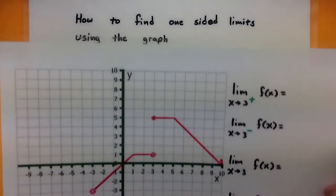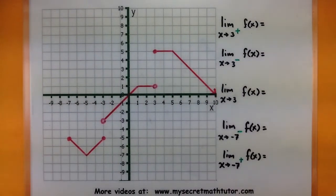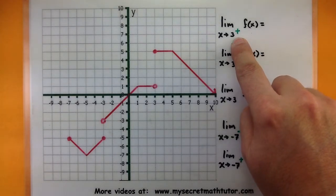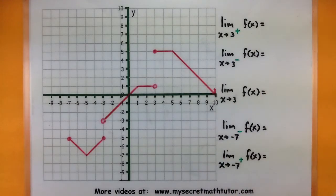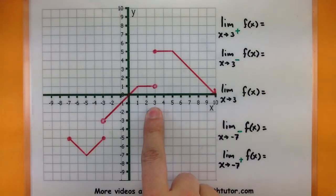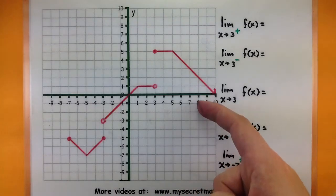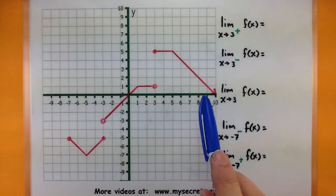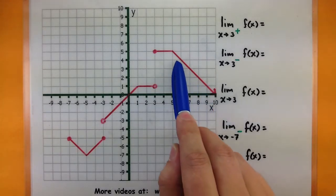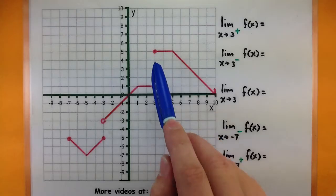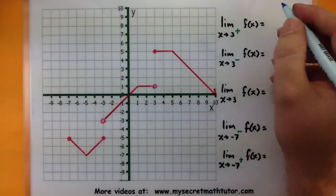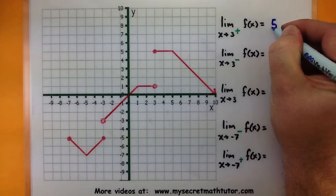Let's jump into some examples and see how this is going to work. In this first one we are going to look at the limit of the function as x approaches 3 from the right side. We begin by finding 3 on our graph and think about what's happening as we approach it from the right side. Follow the function as you approach 3 from the right and see the y value you're getting close to. Approaching 3 from the right side, it looks like the y value wants to be 5. So that would be the right-sided limit.